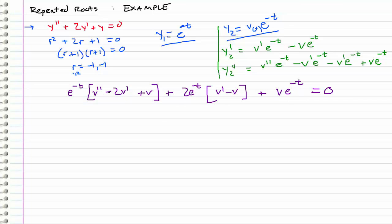And the first thing that I want to do is, again, just cancel out this e to the negative t, because it's never zero. So I can divide both sides by it and get rid of it. Okay, so let's gather the terms.